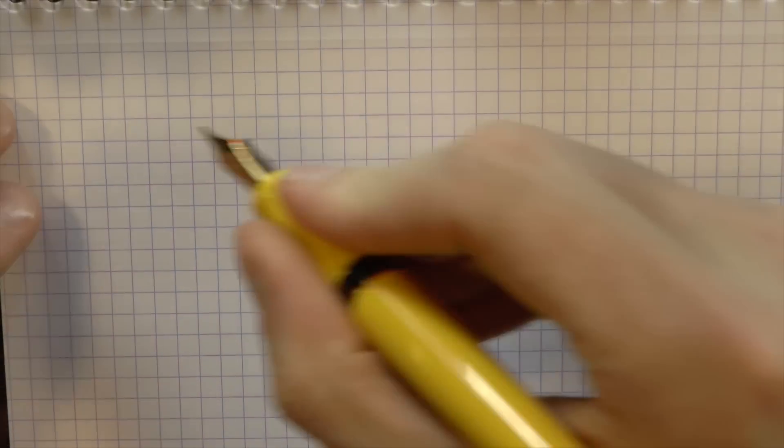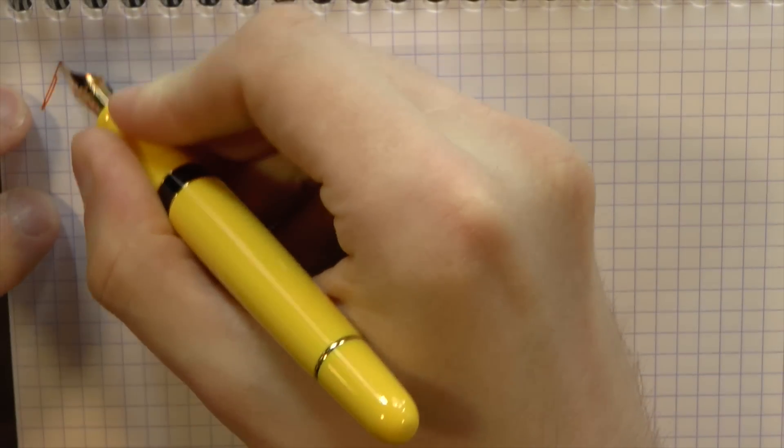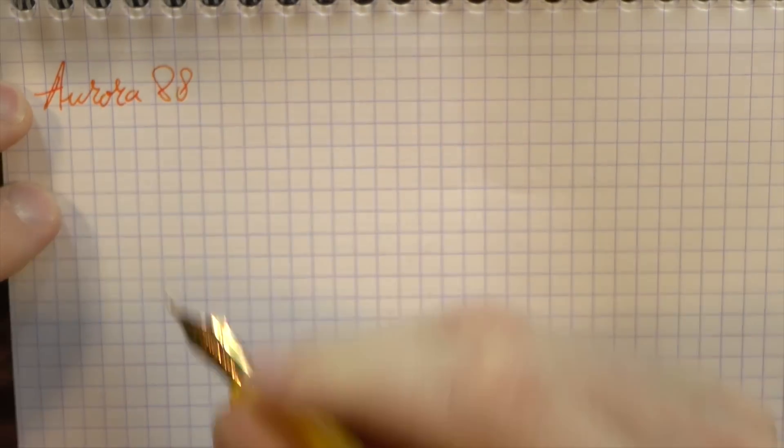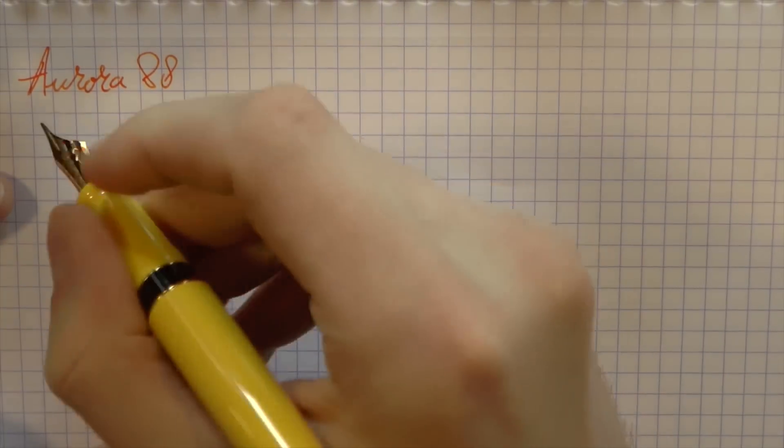So which pen is best? Well, for that purpose, of course, we're doing the shootout, so you can have a look and see them side by side. I want to zoom out as much as possible, so it can give you as much field of view as possible. Let's start out with the Aurora. So we have the Aurora 88. There's not the same ink in the three pens. Sorry, this is just what was in the pens.